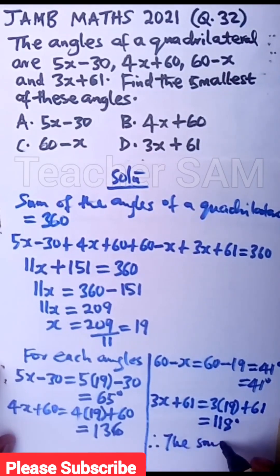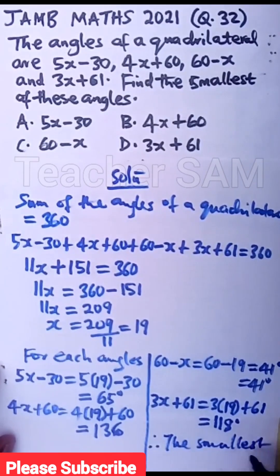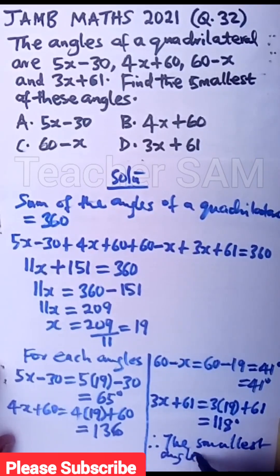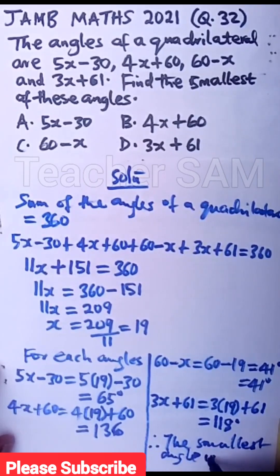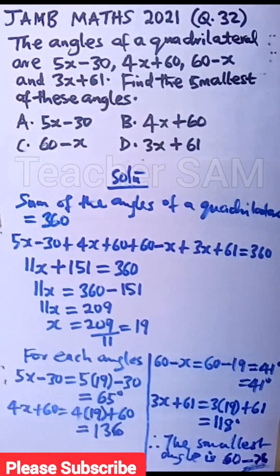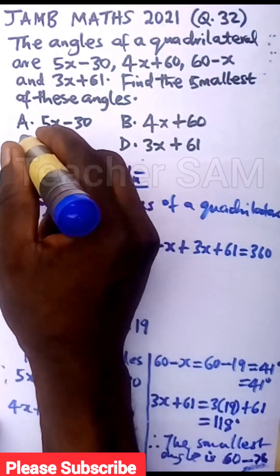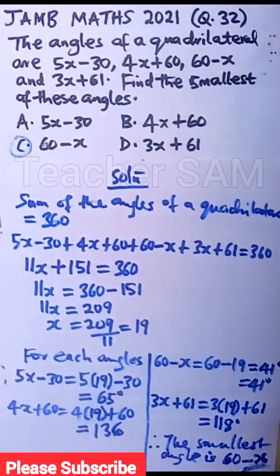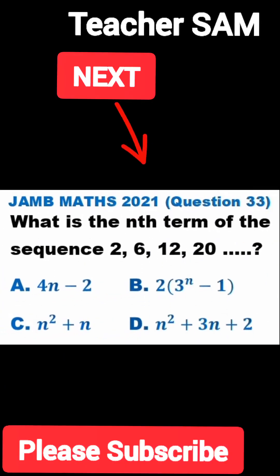Therefore, the smallest angle from what we have just done here is, check that the smallest angle is 41 degrees, which corresponds to 60 minus x. So this is the smallest of the angles of that quadrilateral that was given. And if you check, the correct answer is option C. Option C is the correct answer to that question.